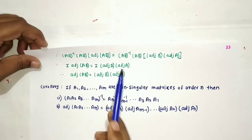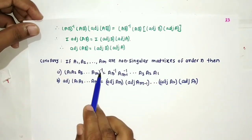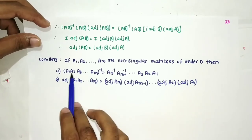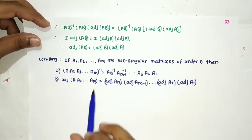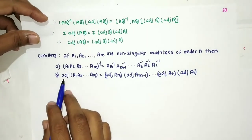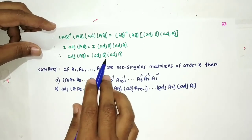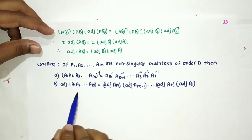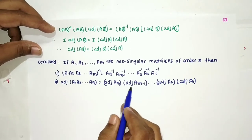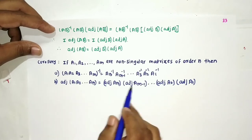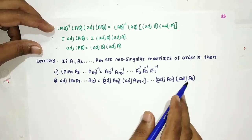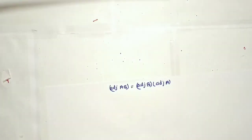In general, for m matrices A₁, A₂, ..., Aₘ, the reversal law gives (A₁A₂...Aₘ)⁻¹ = Aₘ⁻¹ × Aₘ₋₁⁻¹ × ... × A₂⁻¹ × A₁⁻¹. Similarly, adjoint of (A₁A₂...Aₘ) equals adjoint of Aₘ into adjoint of Aₘ₋₁ and so on into adjoint of A₁.